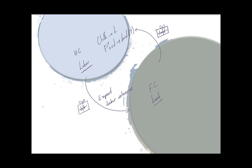The home country is labor abundant, so there is a higher supply of labor there. Before trade, the wage-rental ratio in the home country was lower — labor was cheaper. That's why the labor-intensive good was cheaper in the home country and they exported it. When they export the labor-intensive good, it's as if they are exporting labor to the foreign country. Indirectly, the supply of labor in the home country decreases and wages start rising, while the foreign country receives labor-intensive goods, increasing its effective labor supply and seeing a fall in wages.